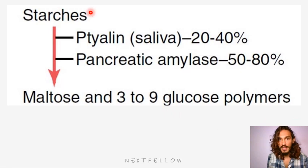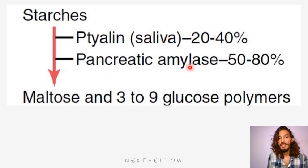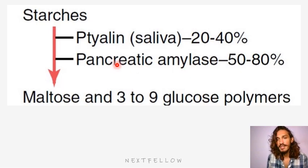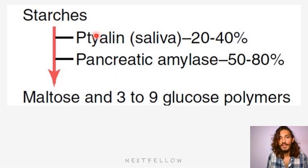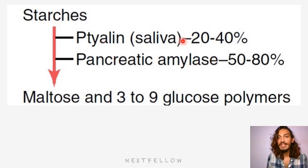When starches are ingested, ptyalin acts, which is in saliva. And then later in the pancreas, pancreatic amylase acts. Just remember that in the stomach, there is no amylase secreted from the stomach. Rather, what happens is this ptyalin continues the activity even in the stomach. So from the mouth it starts, it continues activity in the stomach, and then from the pancreas the pancreatic amylase also acts. Ptyalin constitutes around 20-40% of the digestive activity of starch and 50-80% from pancreatic amylase.